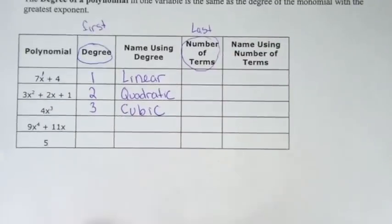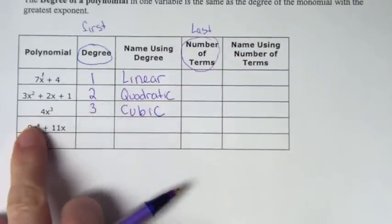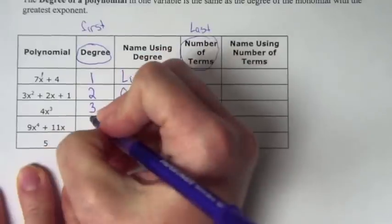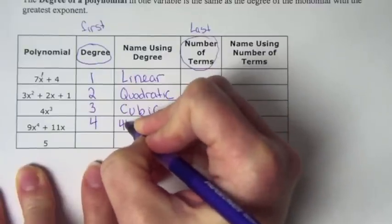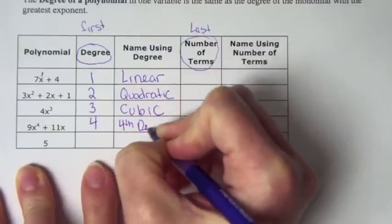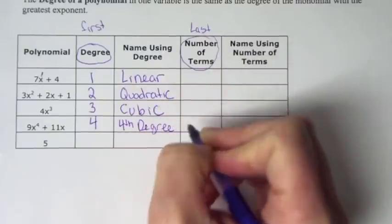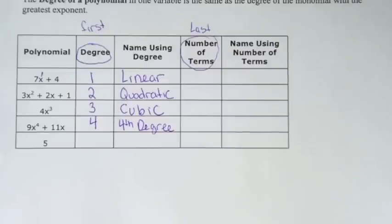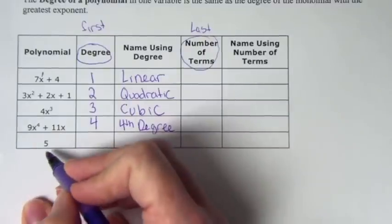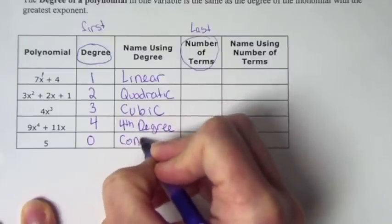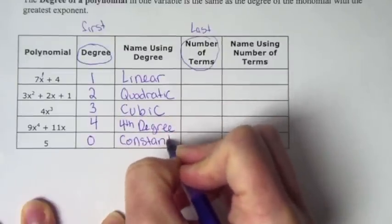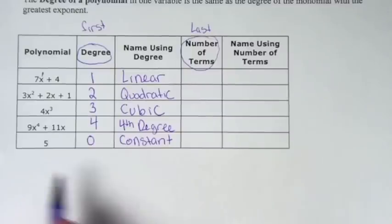If you look at the next one, what's the degree on it? It's a degree of 4. So we just call that 4th degree — we don't have a special name for anything 4 and above. If it's 4th degree, we call it 4th degree; 5th degree, we call it 5th degree. And the one with degree 0 — if it's just a number, its first name is constant.